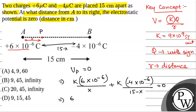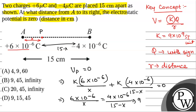From here we have 6 × 10⁻⁶ / X = 4 × 10⁻⁶ / (15 − X), which gives 90 − 6X = 4X, so X = 45 centimetres. This is the value of X when the AB line is produced, so the first value of X is 45 centimetres.